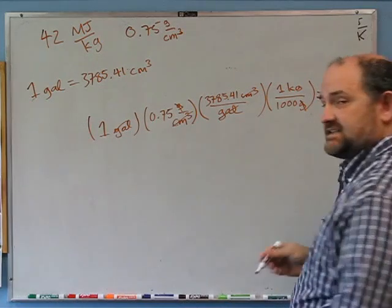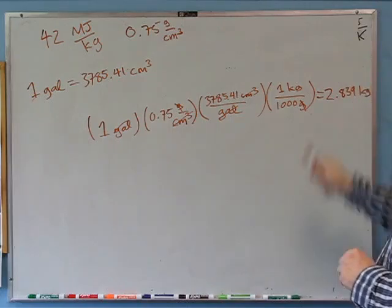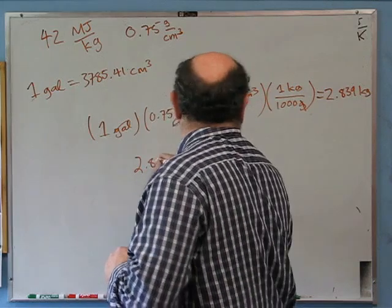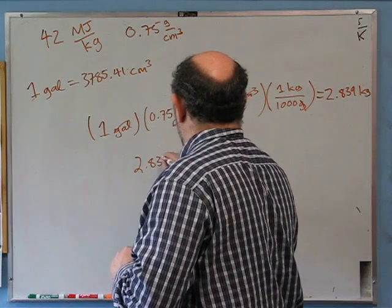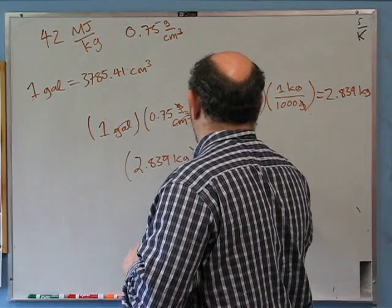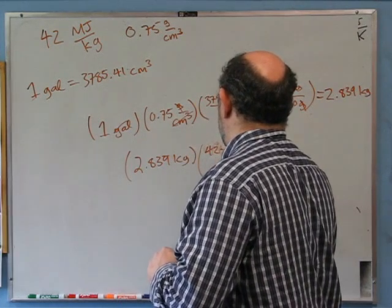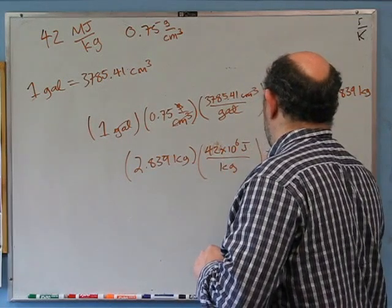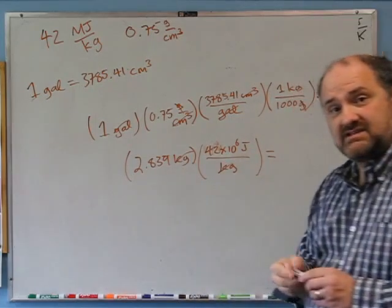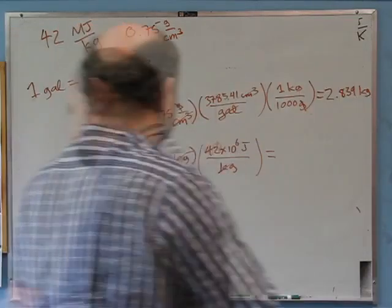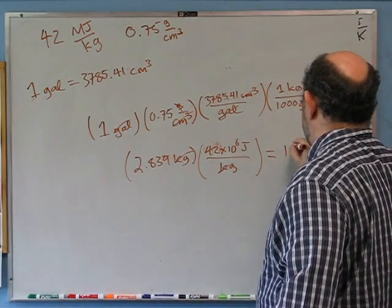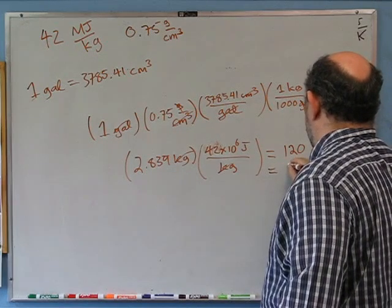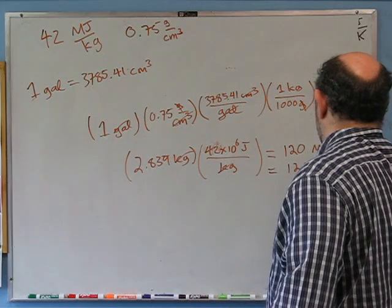I'm keeping extra digits since this is an intermediate number. That's how many kilograms we have. So the energy released is the mass of gas, 2.839 kilograms, times the chemical energy stored per kilogram — 42×10⁶ joules per kilogram. Kilograms cancel, and I multiply those two numbers to get 120 megajoules, to 2 sig figs.